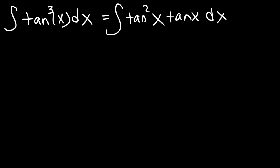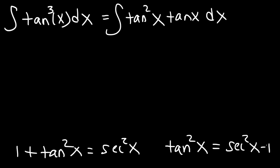Now the reason why we want to do that is because tangent squared is equal to an identity. 1 plus tangent squared is equal to secant squared. So if we subtract both sides by 1, tan squared is secant squared minus 1. And so let's replace tan squared with this expression.